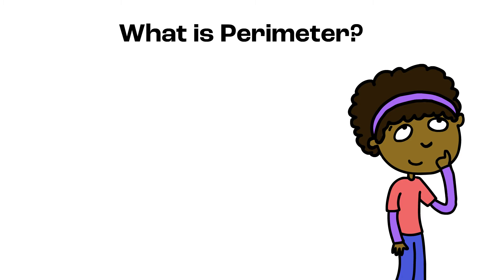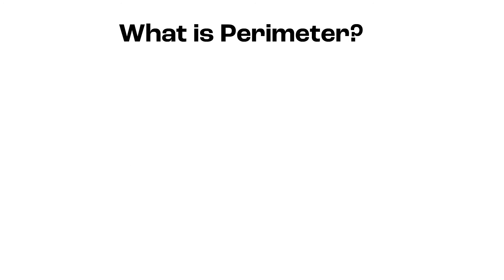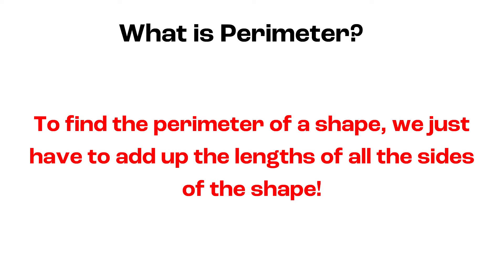Perimeter. What is perimeter? Perimeter is the length around a shape. To find the perimeter of a shape, we are finding the length of the boundary around the shape. To find the perimeter of a shape, we just have to add up the length of all the sides of the shape.